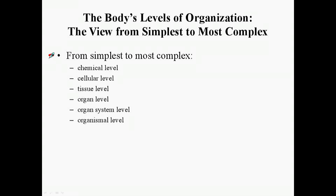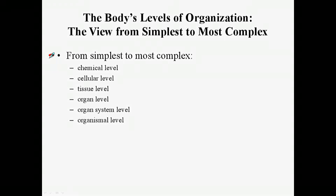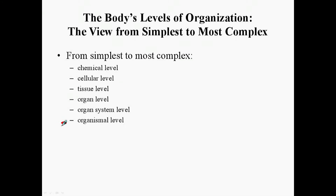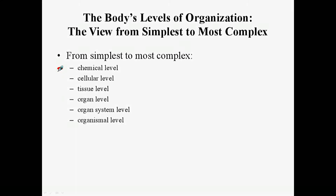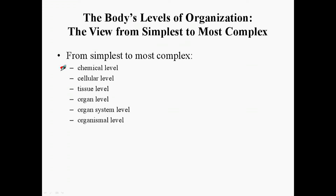When you look at these organisms, they will often have the same levels of organization. For example, a human and a pig have the same levels of organization from chemical to organismal. Some organisms, such as bacteria, won't get to the tissue level, but they do exhibit the first two: the chemical and cellular levels. Let's take a look at each of these.